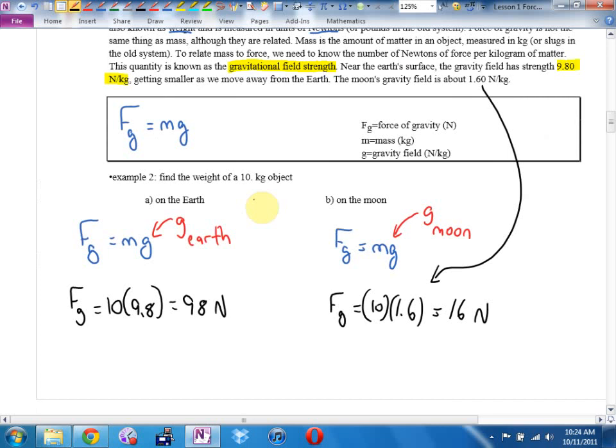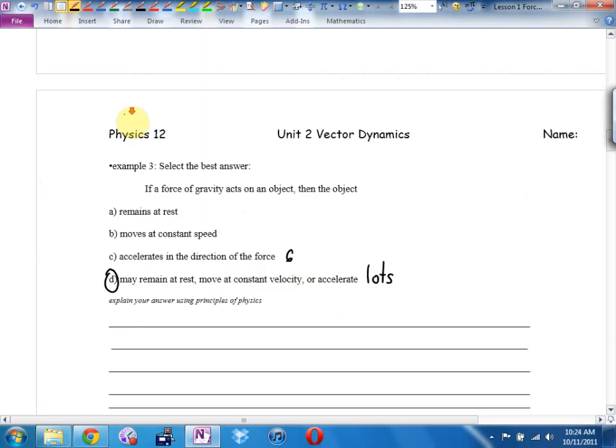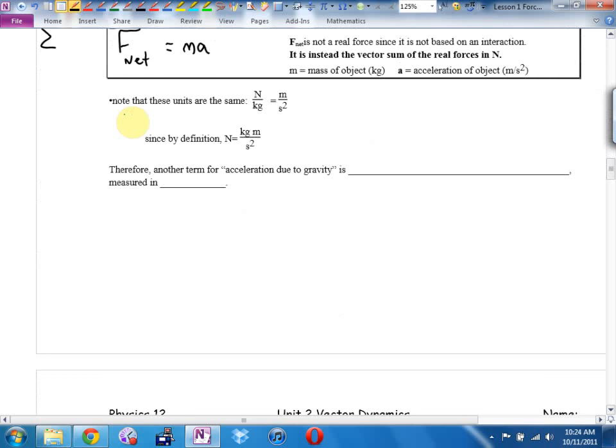By the way, back here, I said that Newtons per kilogram were the same as meters per second squared. Here's the proof. One Newton per kilogram is the same as a meter per second squared because kilogram meter per second squared is the same as a Newton. Why? Force is what times what, Connor? Mass, which is measured in kilograms and acceleration, which is measured in. Okay, so here's what I'm going to say. Kilogram meters per second squared. That's force. That's MA. And another way to write acceleration is force divided by the mass.